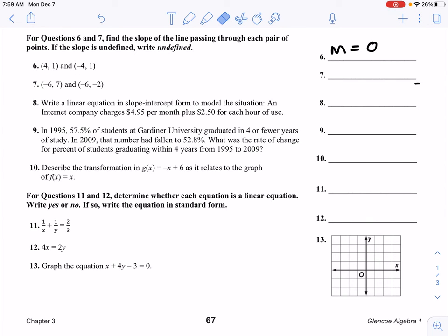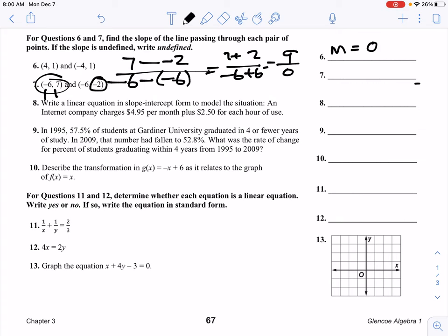Number seven, same thing. I'm going to start with this one. I'll start with my y from that, so I'm gonna go seven minus and then take my next y which is negative two. Because I started with seven, I gotta start with my negative six there, so negative six minus negative six. Seven minus negative two is seven plus two, which is nine. Negative six minus negative six is negative six plus six, which is zero. We have a case of what we were just talking about, so in this case we would say it's undefined.